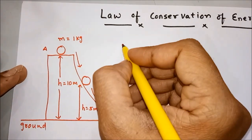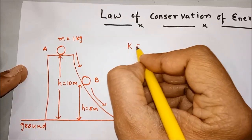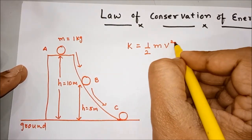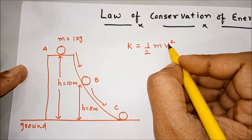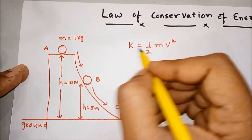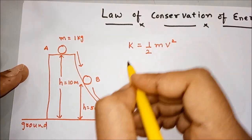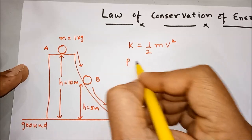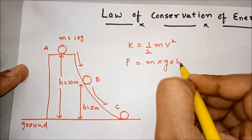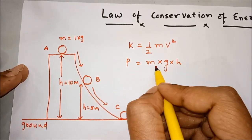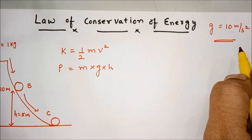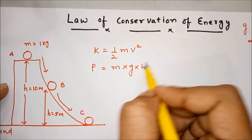Now, we know that kinetic energy is given by half mv squared, where v is the speed of the object. Kinetic energy of the body is due to the virtue of its motion. We know that potential energy P is given by mgh — this is gravitational potential energy, where m stands for mass, g for acceleration due to gravity, and h stands for height above the ground.